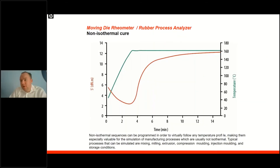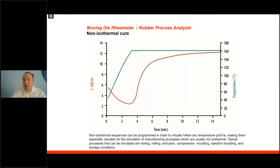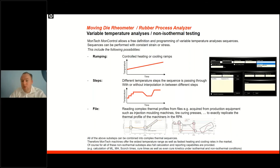Most manufacturing processes in the rubber industry are not isothermal — they're non-isothermal, meaning the material passes through different temperature zones. For example, material getting heated up in about three minutes from ambient temperature to 160 degrees. The same can be simulated with a rubber process analyzer to understand curing under specific thermal conditions, as well as changes in elasticity and viscosity. All this can be combined into complex processes with different ramps or steps, simulating even the most challenging thermal profile.